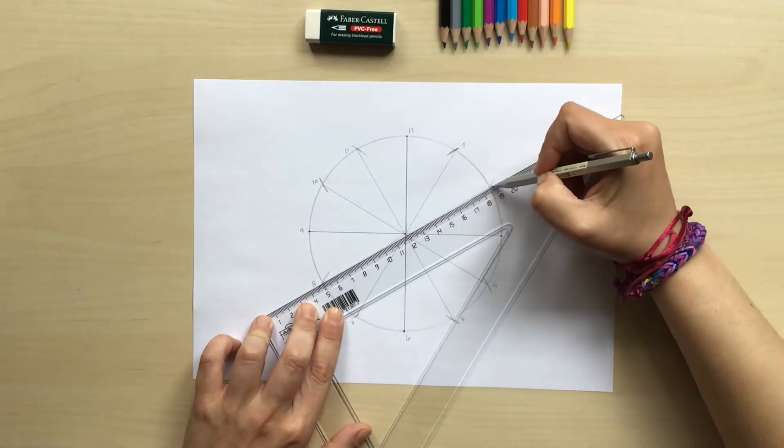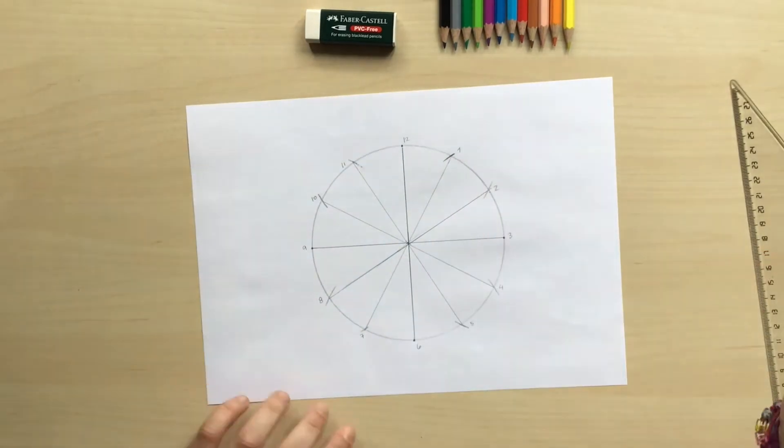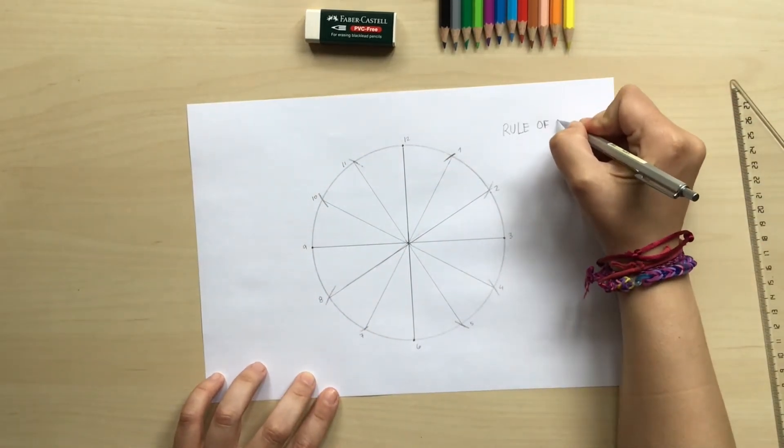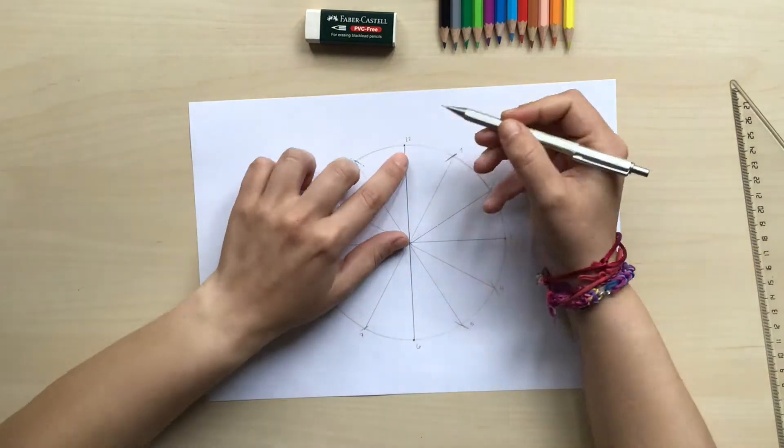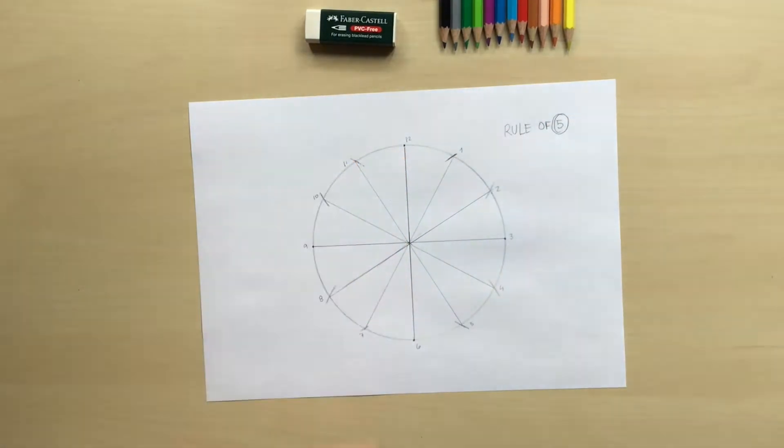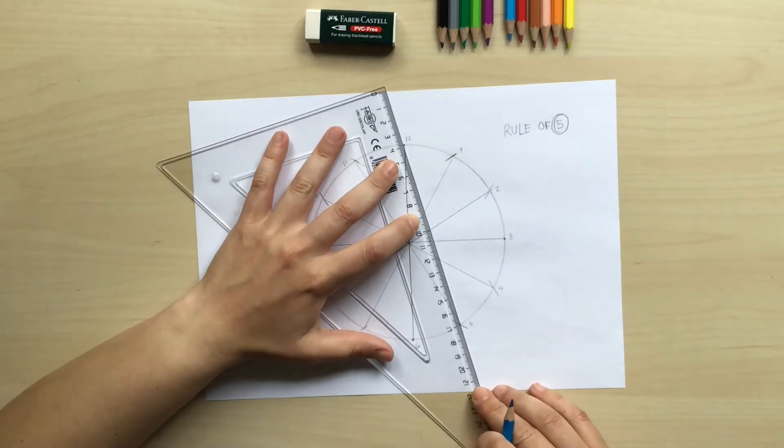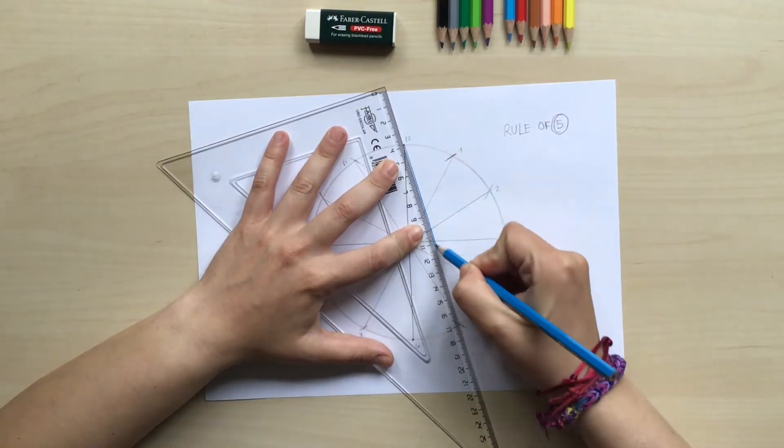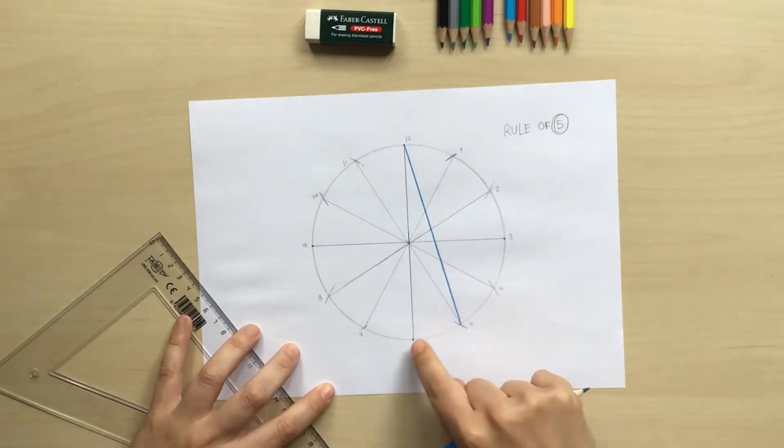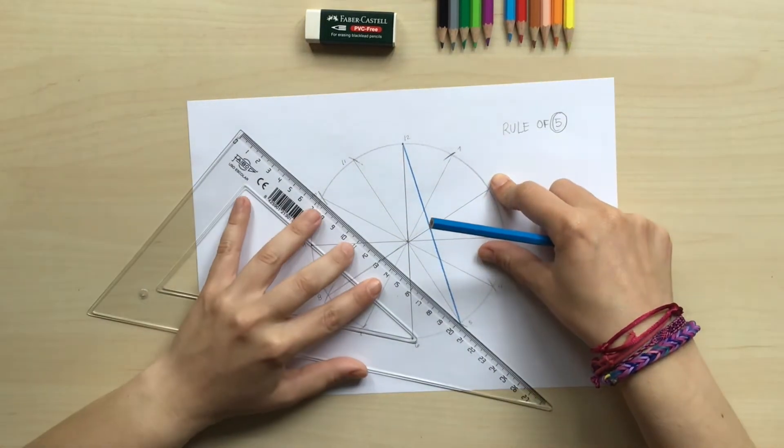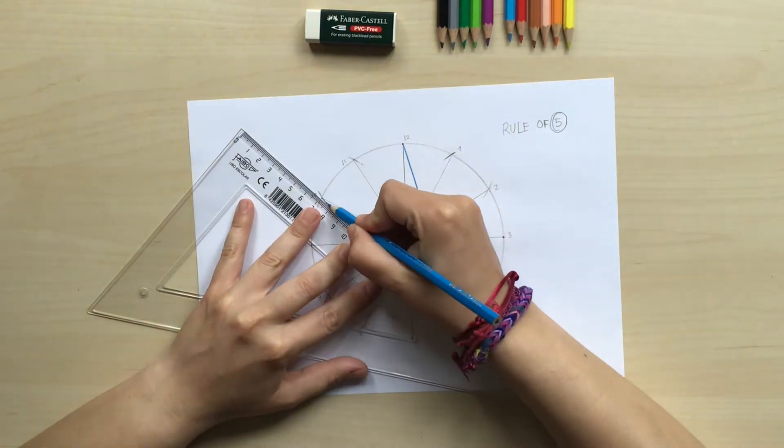Now our circle looks like a perfect wheel or a clock and now we're gonna apply the rule of 5. We're gonna match each dot with the opposite dot by adding 5. So for example from 12 I'm gonna make a line and match it to 5. From 5 I'm gonna add 5 and we're gonna make a line that goes to 10.